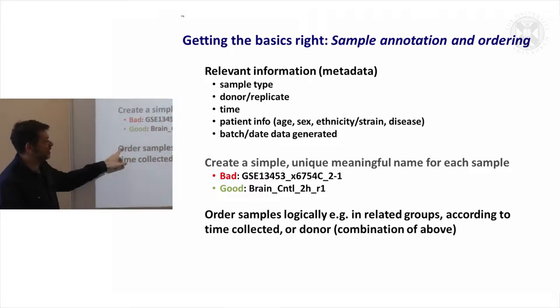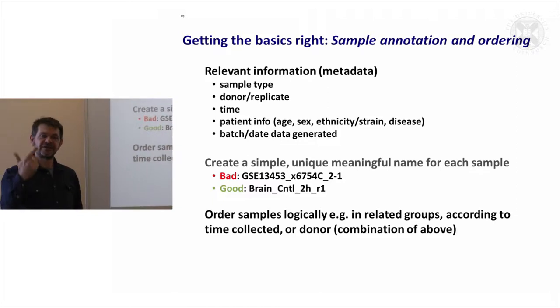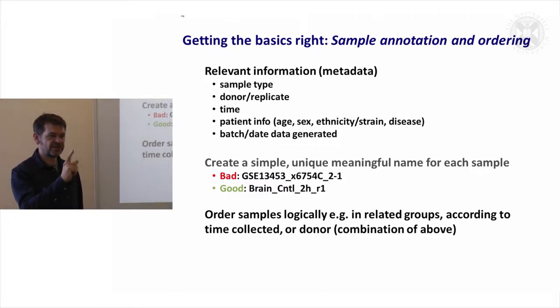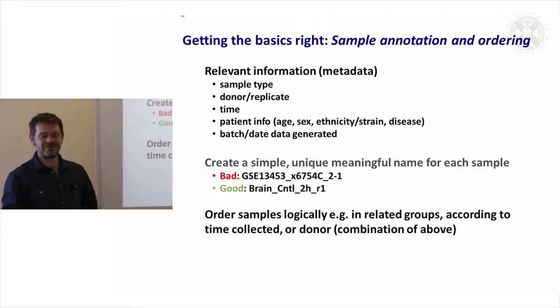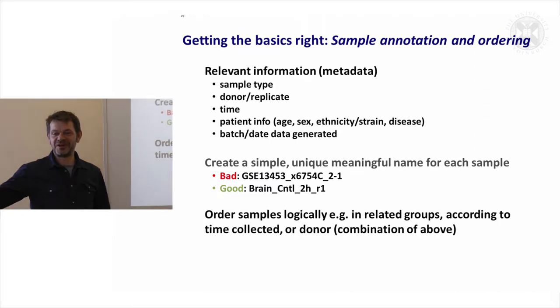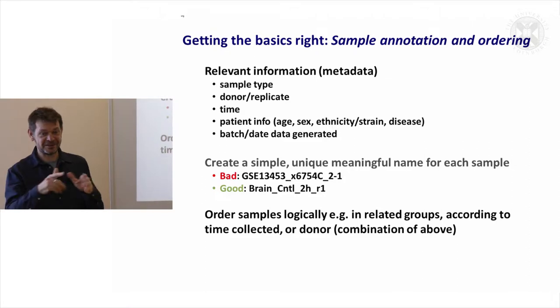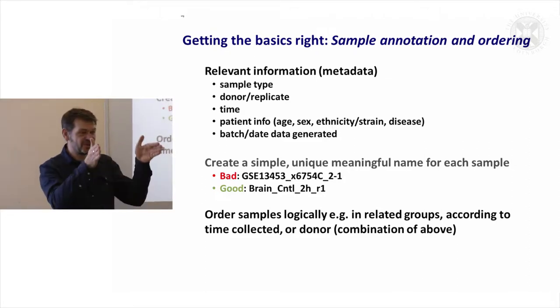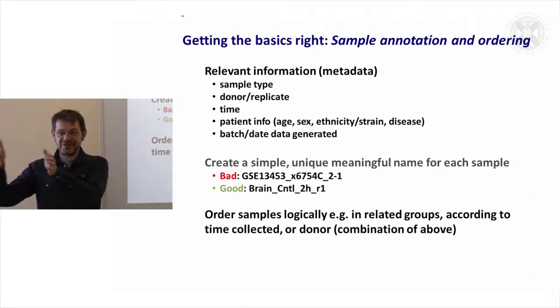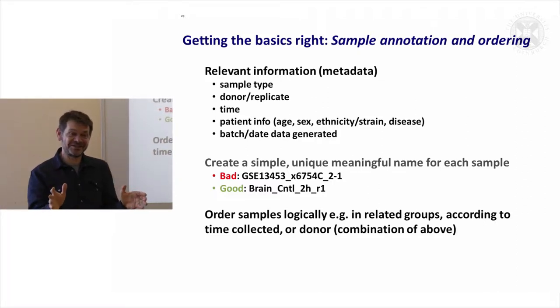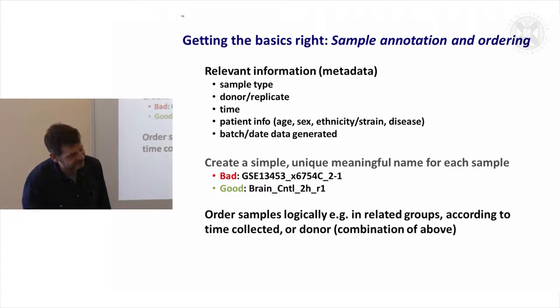Because what we're going to be doing is essentially looking for patterns, you must order your samples in a way that you understand the pattern. If you've got a time course, make zero hour on the left and put your latest time point on the right. Don't randomize them around or you won't understand what the pattern is. If you've got replicates, put replicate one, replicate two, replicate three. Very basic stuff, but very often people turn up at my office and the first thing I do is say, right, let's just work out what we're dealing with here.